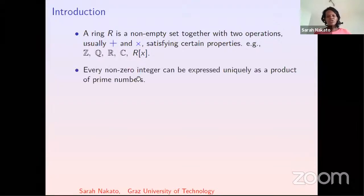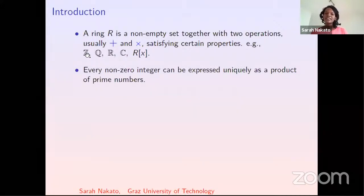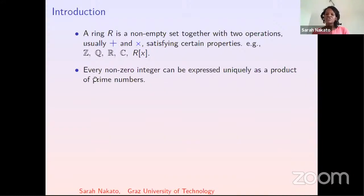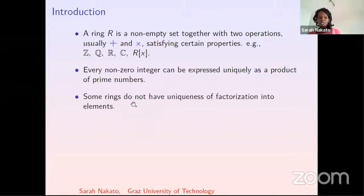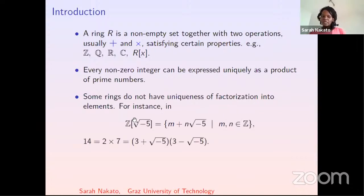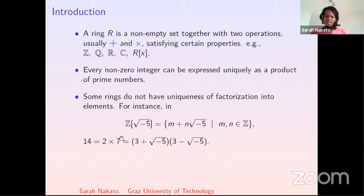We know that every non-zero integer can be expressed uniquely as a product of prime numbers. So we say that in this ring of integers, we have uniqueness of factorization into elements. This is not the case in an arbitrary ring — there are some rings which do not have uniqueness of factorization into elements. For example, in this ring, we have 14 equals two times seven, but 14 also has another factorization.